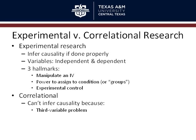Two primary reasons for that. One: the third variable problem. Variables A and B are related — the more of A, the less of B, or the more of A, the more of B. But it could be some third variable C that accounts for that relationship between A and B. Maybe C causes A and causes B, or A causes C which causes B.